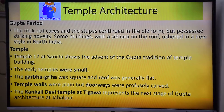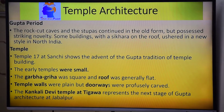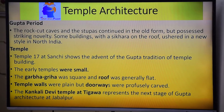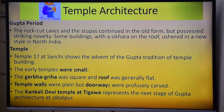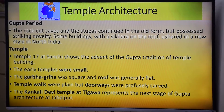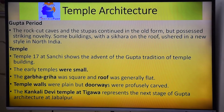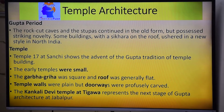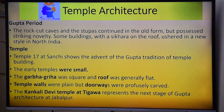The early temples were generally small and square, like a room with one flat roof. The entrance of these temples was carved.